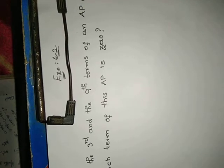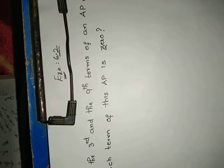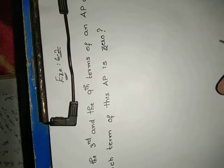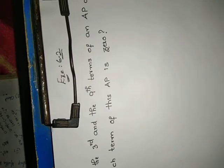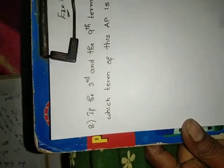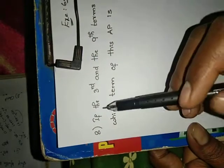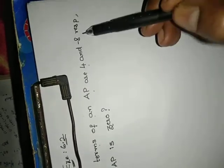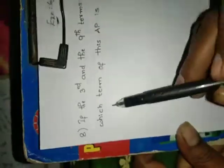Hello, hi, welcome to Pannika Maths. Today we are going to discuss Exercise 6.2, 8th problem. See the question: if the 3rd and 9th terms of an AP are 4 and minus 8 respectively, which term of the AP is 0?